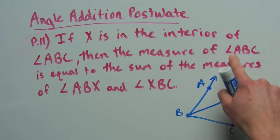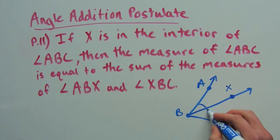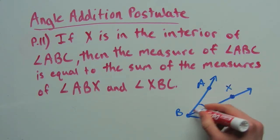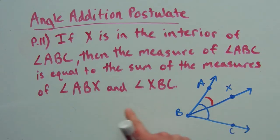So the measure of ABC, the measure of this entire angle, is equal to the sum of the measures of ABX and XBC.